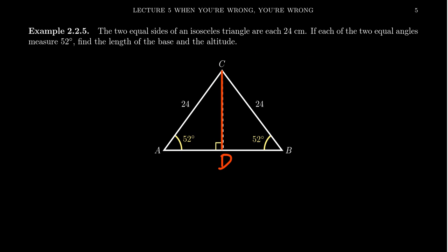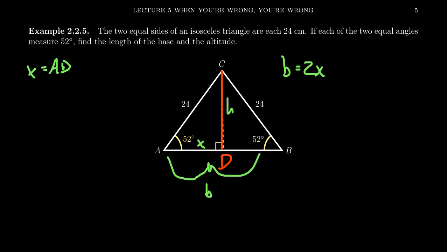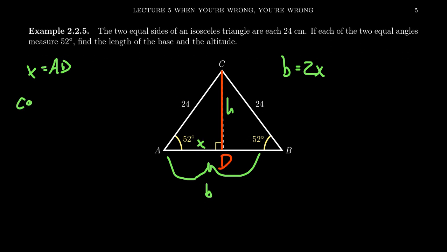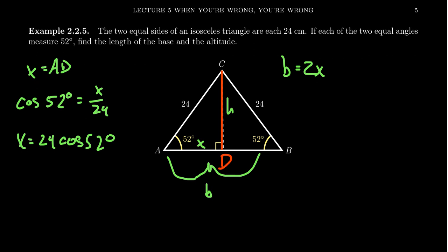The altitude is the height of the triangle, and the base will be labeled B. I'll introduce a new symbol, x, as the distance between A and D, which is half of the base — so the base equals two times x. To find x, we use a right triangle relationship on triangle ADC. X is the adjacent side with respect to angle A, and the hypotenuse is 24. So cosine of 52 degrees equals x over 24, which gives x equals 24 times cosine of 52 degrees. Since the base is two times x, the base equals 48 times cosine of 52 degrees.